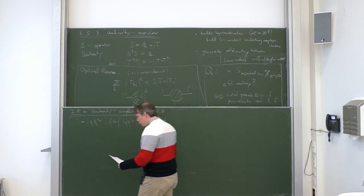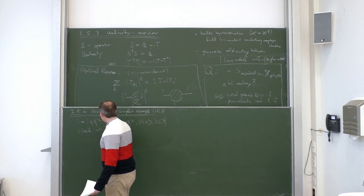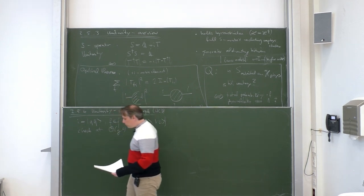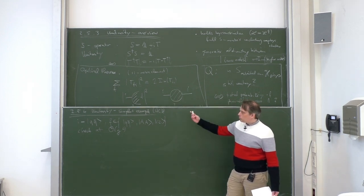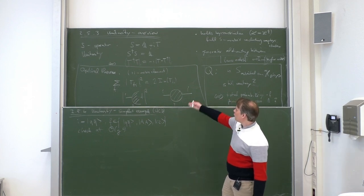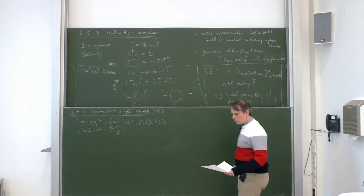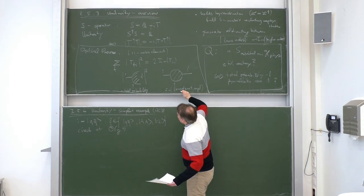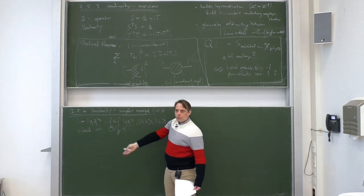Let us consider this case and check the optical theorem relation at order g to the fourth power in perturbation theory. Feynman diagrams are expressions at some order in the coupling constants, and we want to check this equality at fourth order in the coupling. Let us write down the equation we need to check for that specific case — it will take the form of a table.